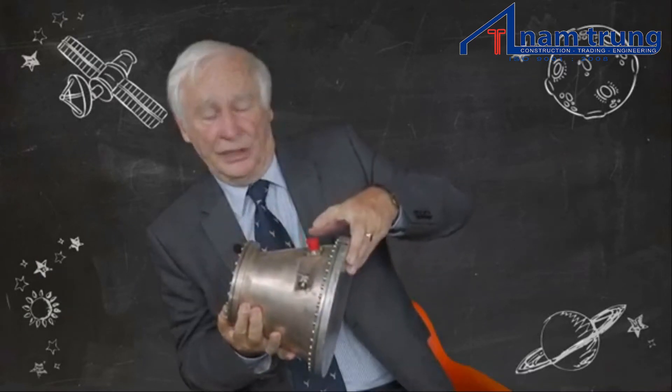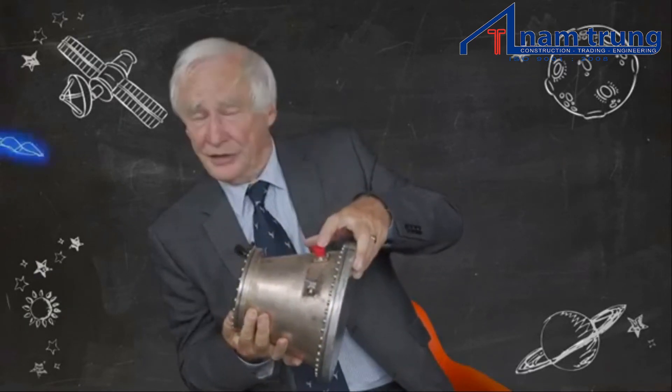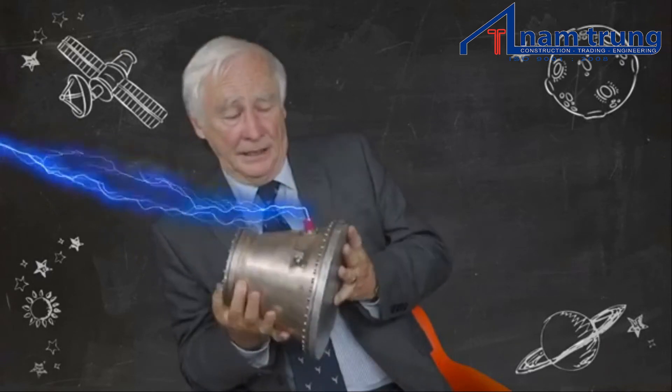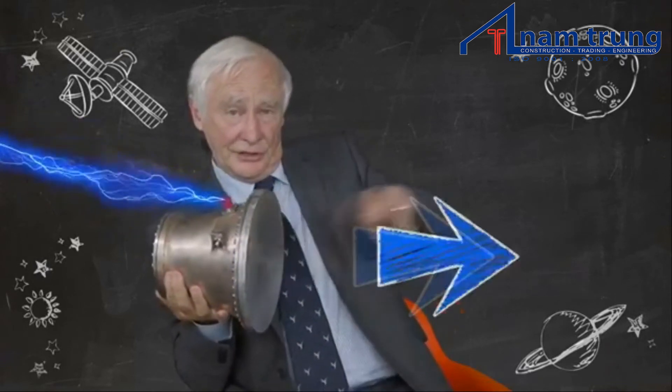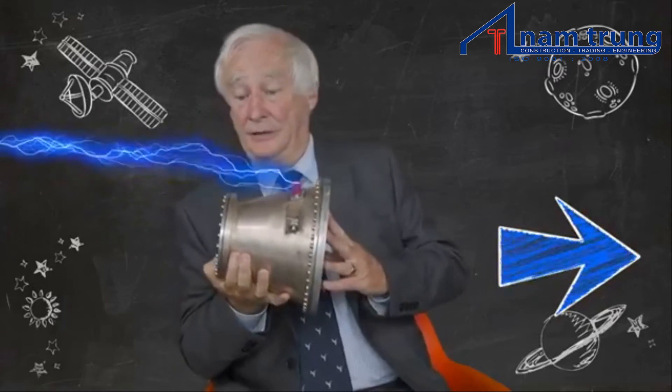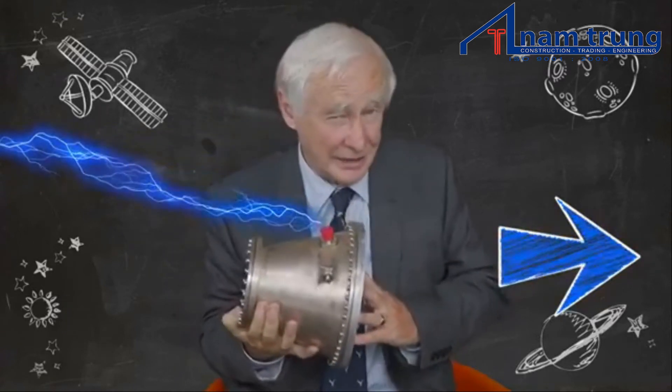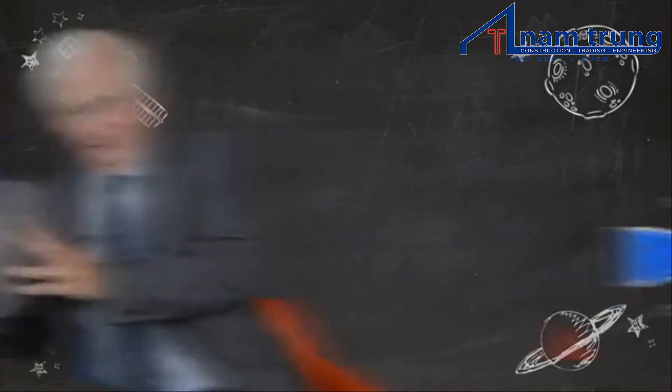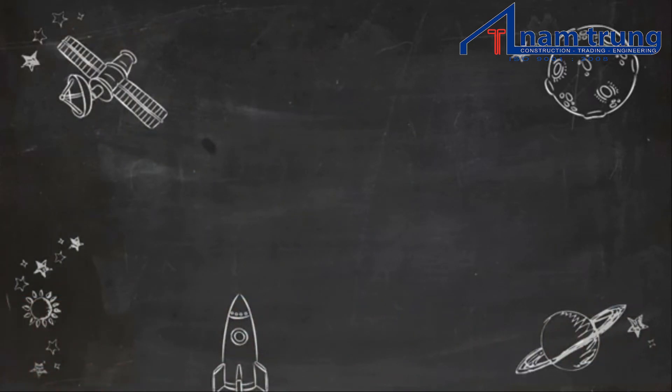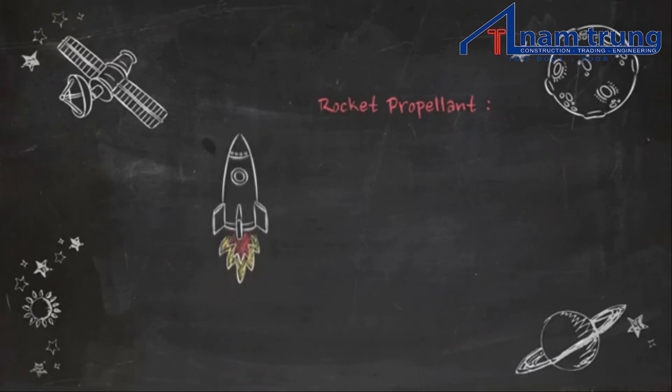You put electrical energy into this connector here and it produces a force in this direction which propels the thruster and anything it's connected to in this direction. A normal rocket engine or jet engine works because it is pushing propellant in this direction.